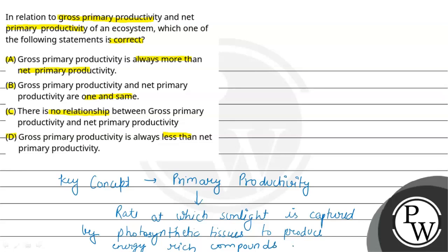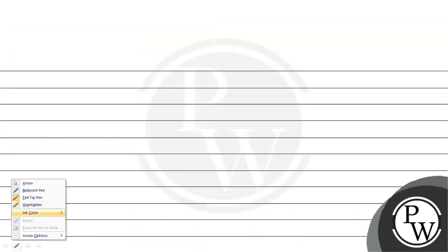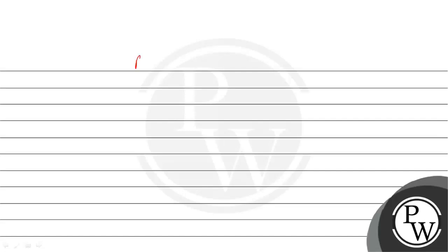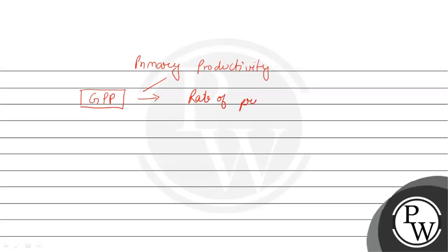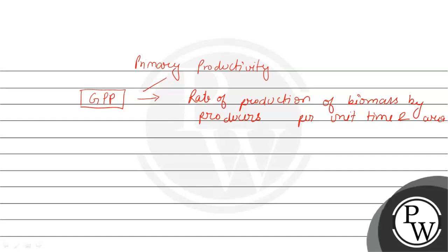Now, primary productivity is divided into two classes. Primary productivity is categorized into two parts. The first one is gross primary productivity, that is GPP. GPP is the rate of production of biomass, or we can say organic matter, by producers — producers being plants — per unit time and area. So per unit time and area, what is the rate of production of biomass by the plant — that is GPP, gross primary productivity.